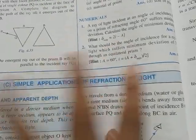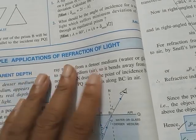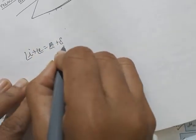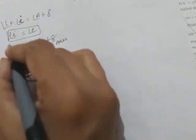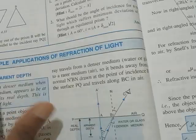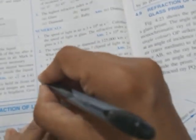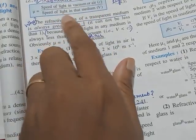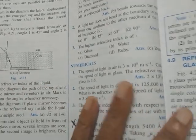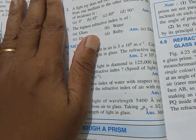There are numericals based on these formulas — very simple. They will give you any three angles and ask you to find the fourth using i + e = A + delta. Sometimes in minimum deviation position use the formula 2i = A + delta-minimum. For Part A, leave the fourth numerical and do the rest — they are all based on refractive index formula: speed of light in air divided by speed of light in medium. Practice these numericals, draw all diagrams, and prepare well for the test. Thank you so much.